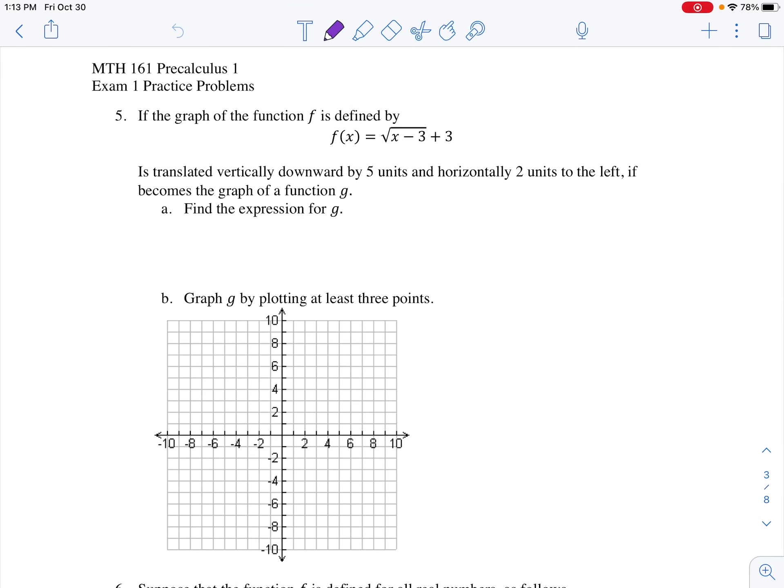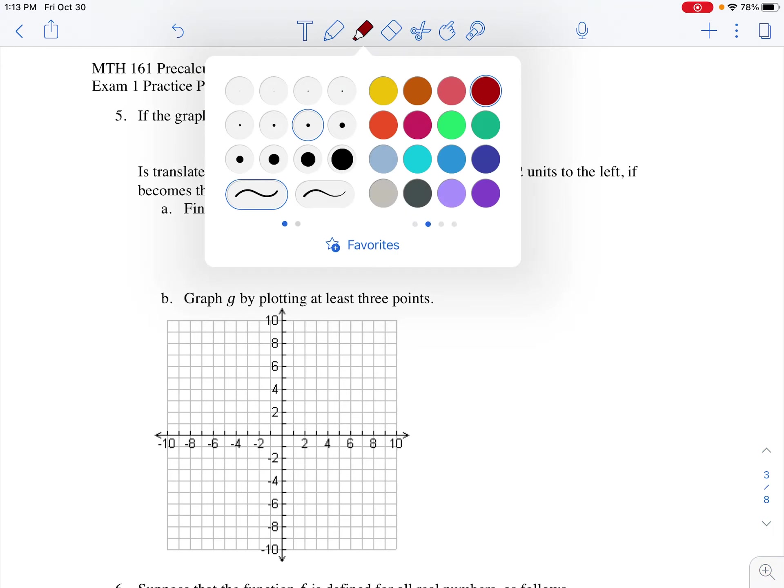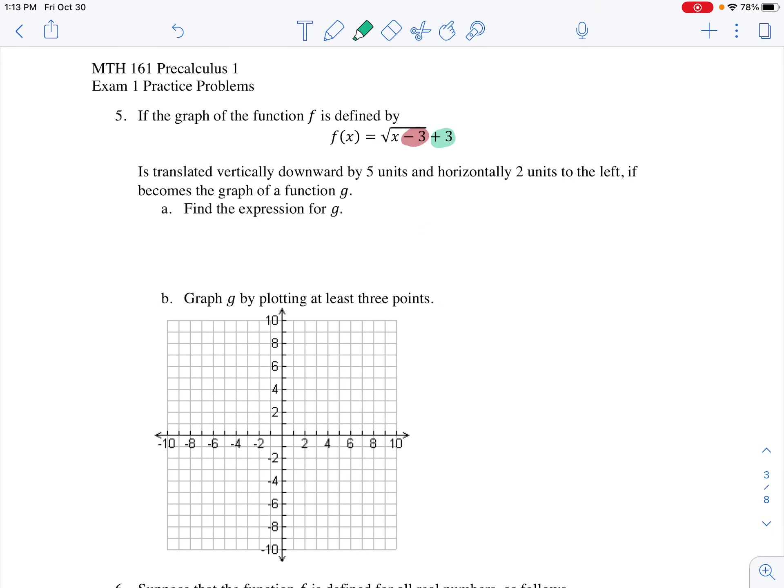Number five, here it is. So if the graph of the function f is defined by f(x) equals square root of x minus three inside the square root, and then we have plus three outside. Let me just talk about what's going on with this graph f(x). This graph is a square root function graph that got shifted up three units from the origin, and then the subtracting three inside moved the graph right three units. So that's what's going on with this f(x) so far.